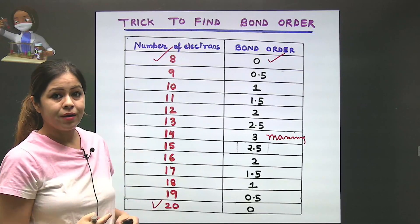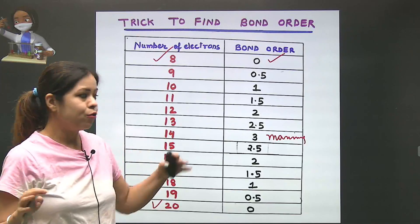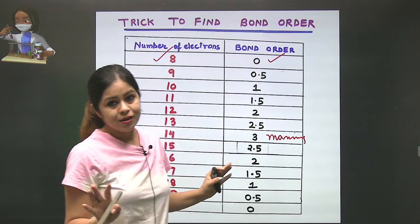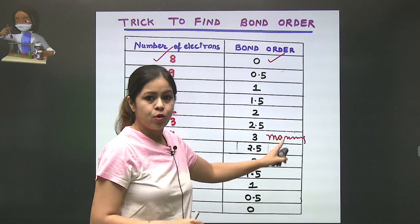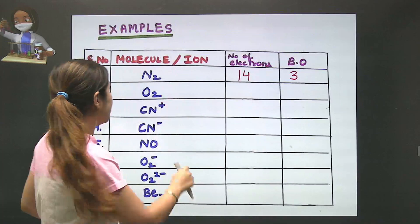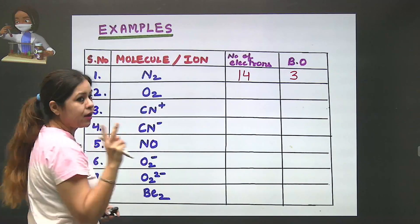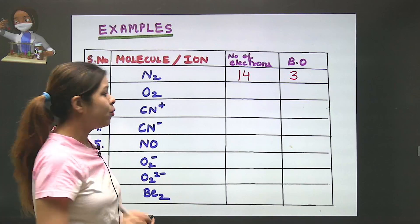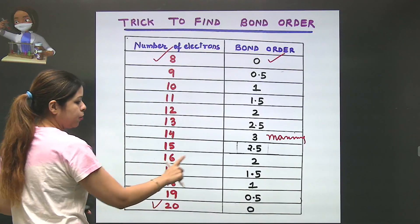If you go on both sides, the difference is 0.5 each time. 3 is the maximum, then we increase or decrease from there. Let's look at O2. How many electrons in oxygen? 8. So 8 and 8 means 16 total electrons in O2. For 16, the bond order is 2.